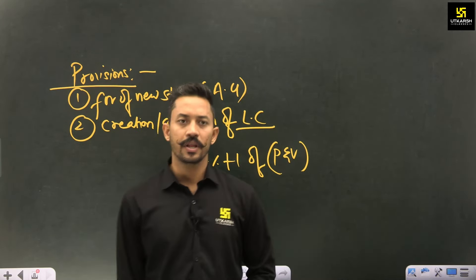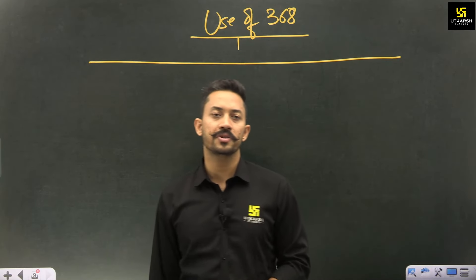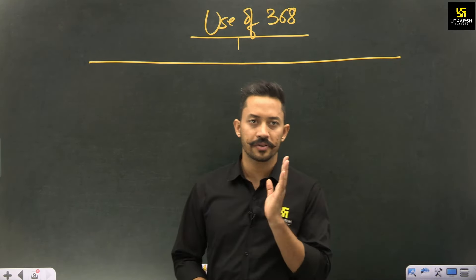Now we come to the use of Article 368. What we saw earlier was outside Article 368. Now let us discuss Article 368 itself. For most provisions of the Indian constitution — excluding those changeable by simple majority and those requiring exclusive majority — you will need to use Article 368. Article 368 answers two questions: who can bring changes, and how. Parliament has the power. The 'how' involves two methods — the first is by use of special majority.